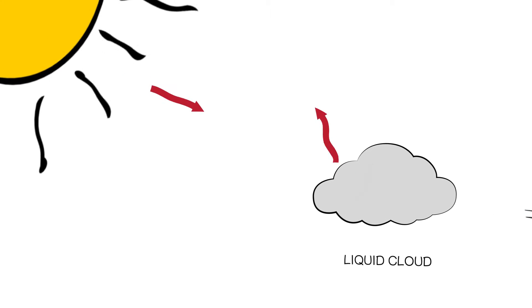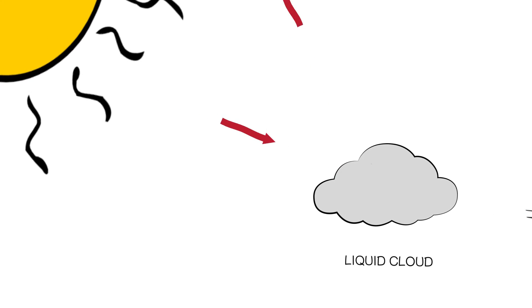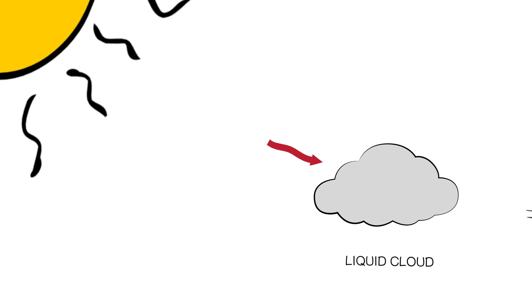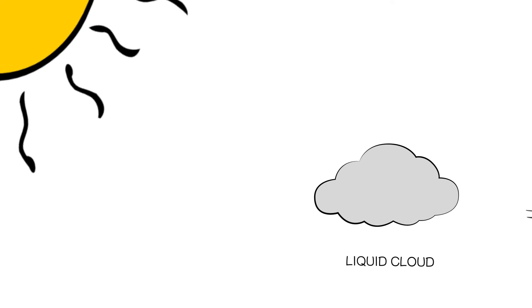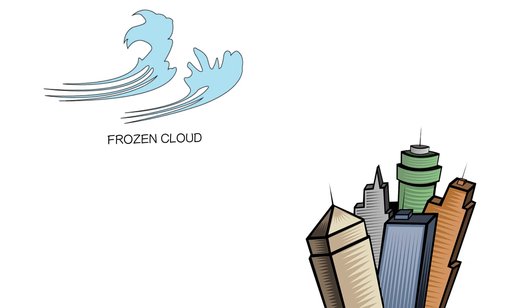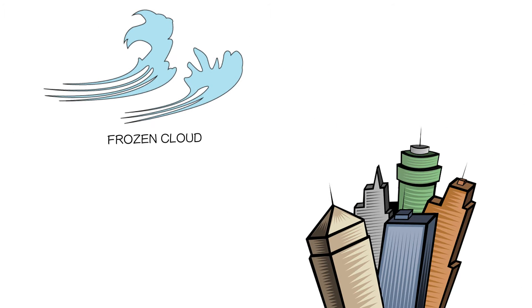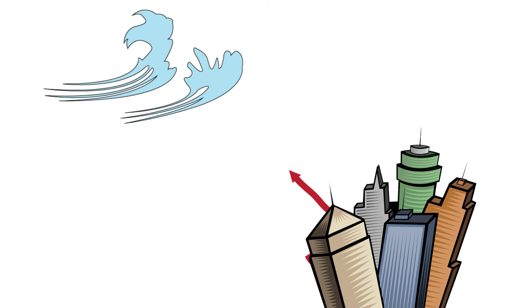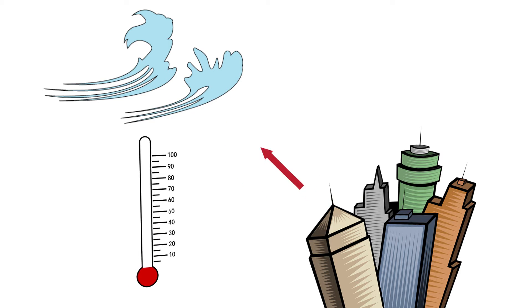Liquid clouds reflect incoming solar radiation, or sunlight, and so they have a net cooling effect on the planet. But ice crystals actually trap outgoing infrared radiation, so they have a net warming effect on the planet.